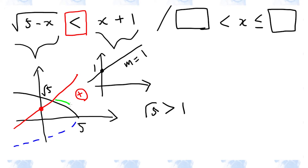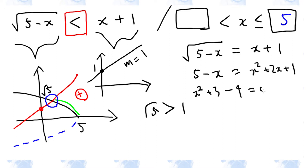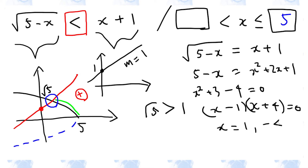We are interested in the region where the half parabola is below the straight line. We need to find the intersection, and we already know the upper limit is 5. To find the intersection, let the left-hand side equal the right-hand side: root(5 minus x) equals x plus 1. First, square both sides. We get two roots, but the intersection must be in the first quadrant, so the x-coordinate must be positive. Therefore, the lower limit is 1, and this is the answer.